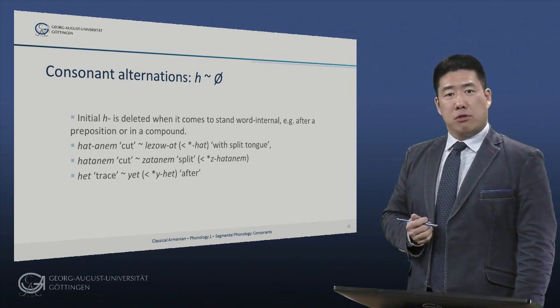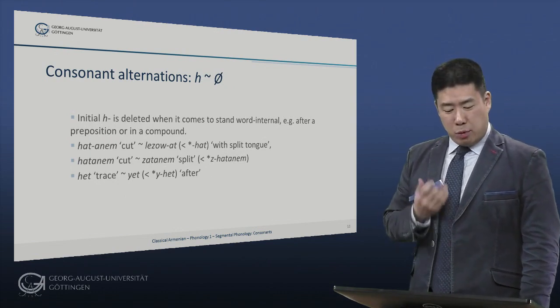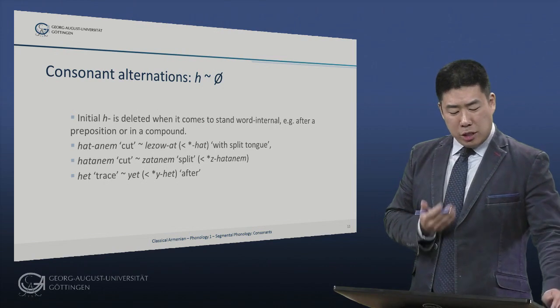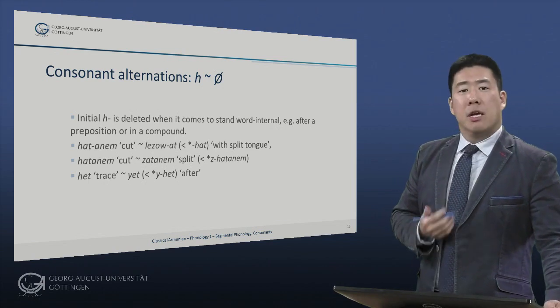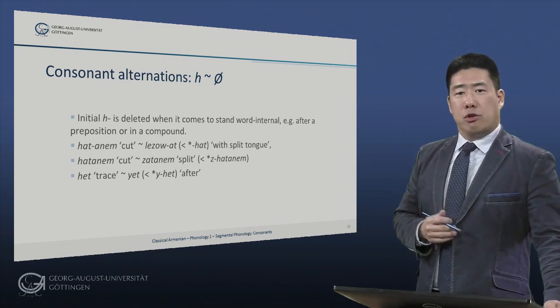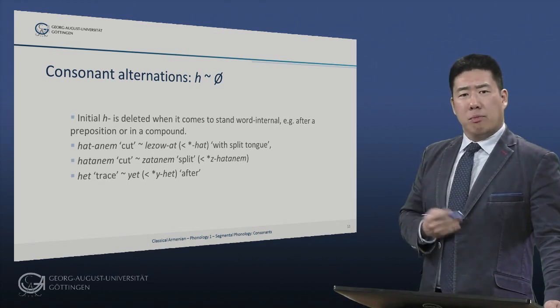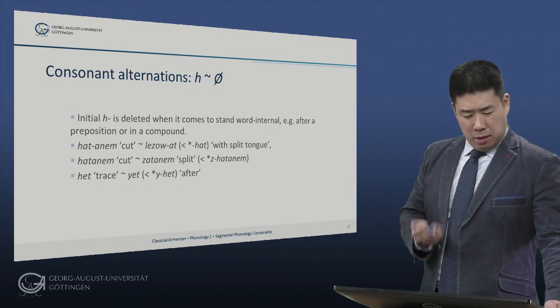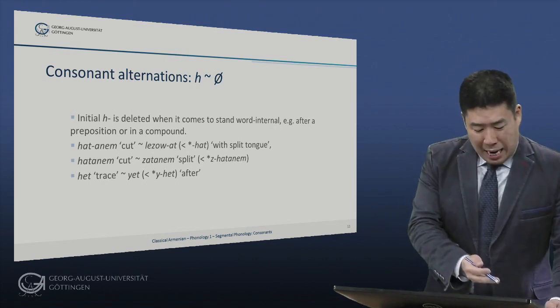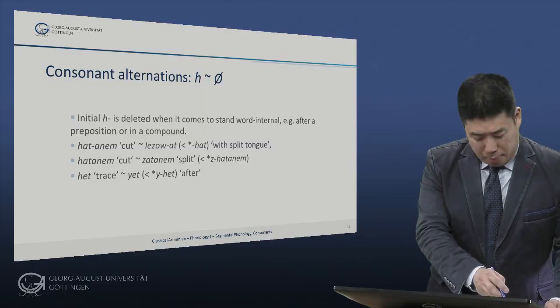Another fully productive alternation is that between H and zero: initial H is deleted when it stands word internally, for example in a compound or after a preposition. So, if we look at the root 'hot', for example, in the verb 'hotanem', we have here in the compound 'lesuat', literally 'tongue-cut' or 'split tongue'.